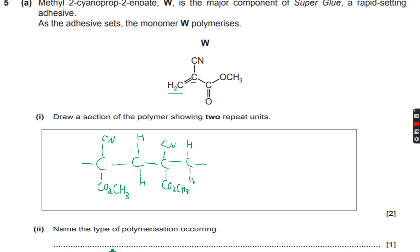Now the second question is name the type of polymerization occurring. So we had already deduced that this was addition polymerization.